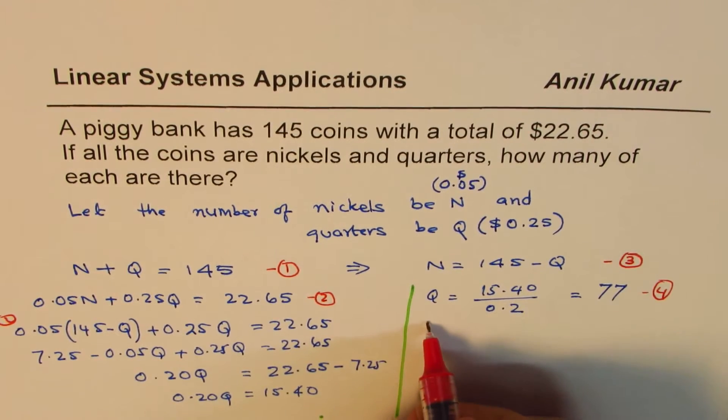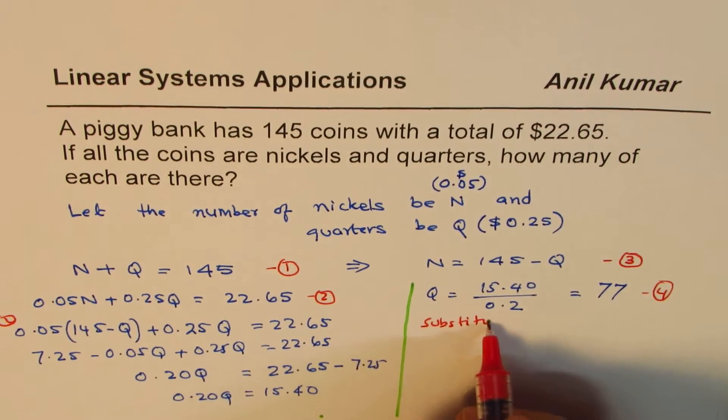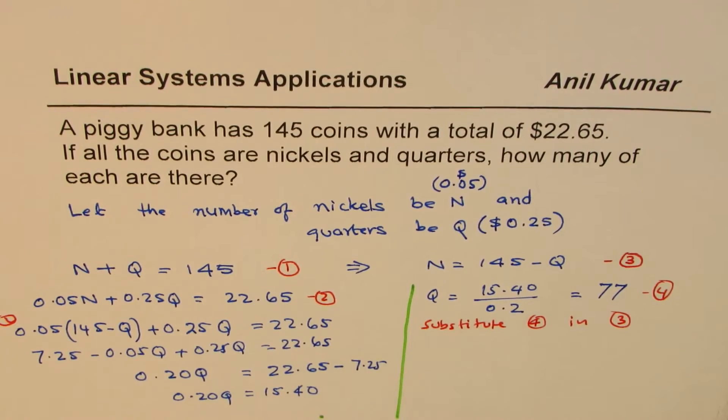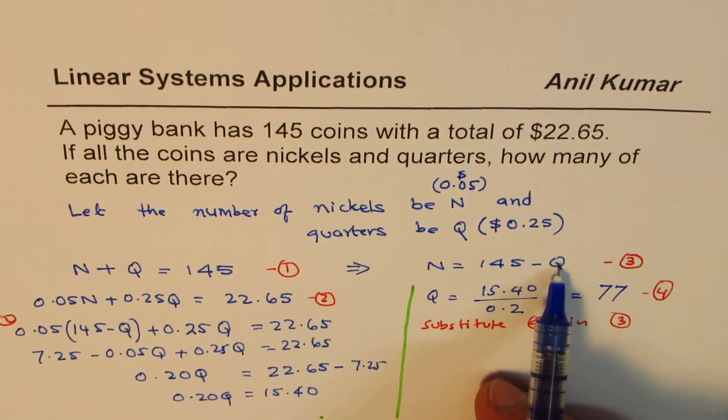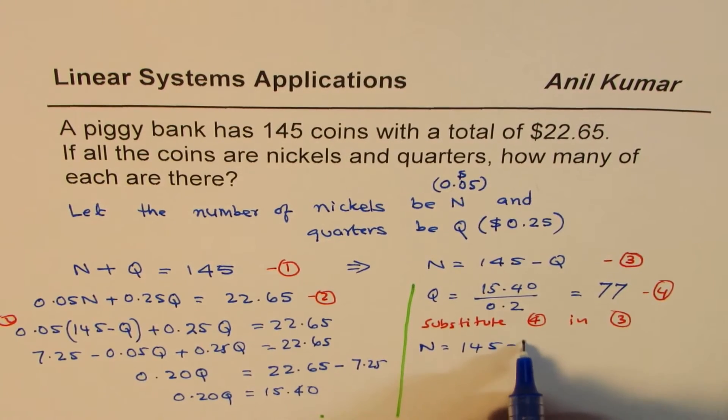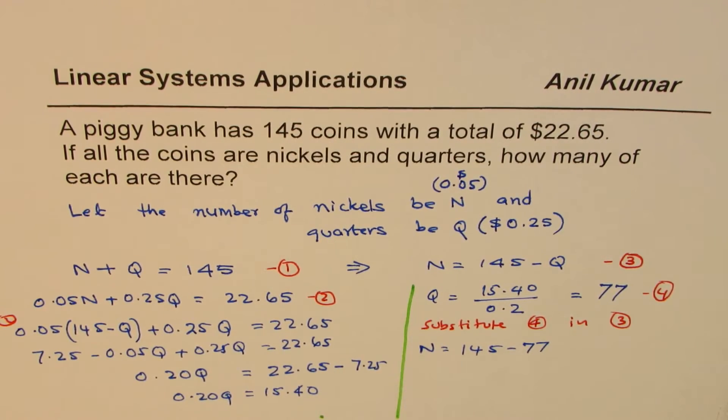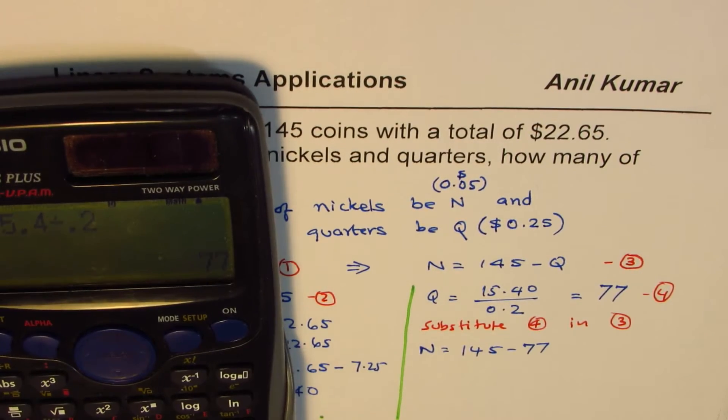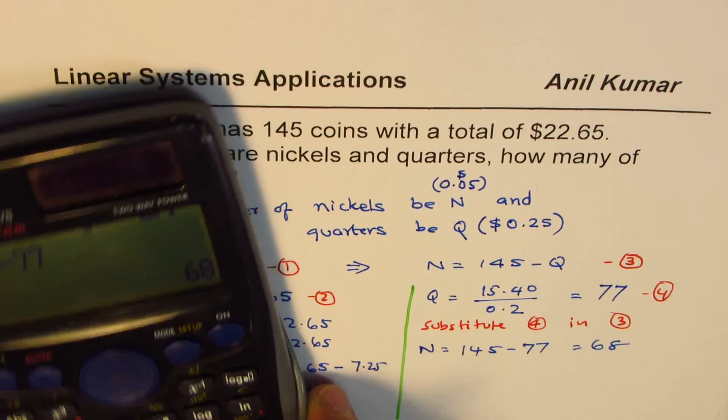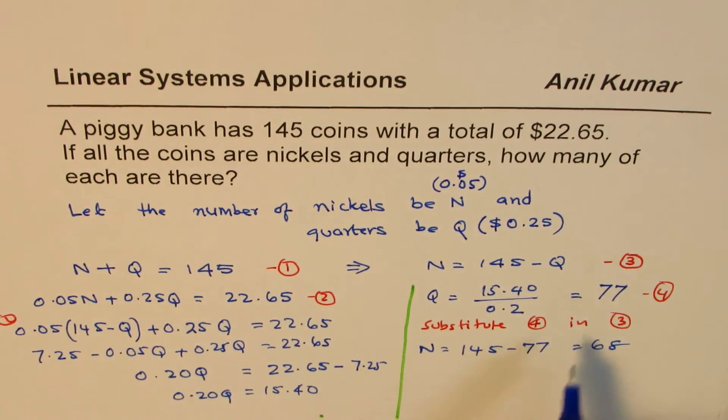And now we'll substitute, that means, equation 4 in 3. So that is to say, number of quarters here. So we have nickels as equals to 145 minus 77. So the number of nickels will be 145, take away 77, which is 68.